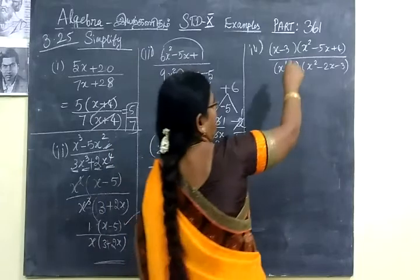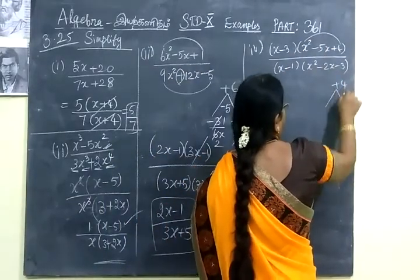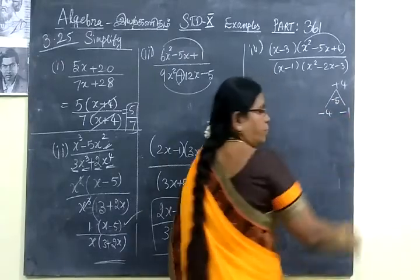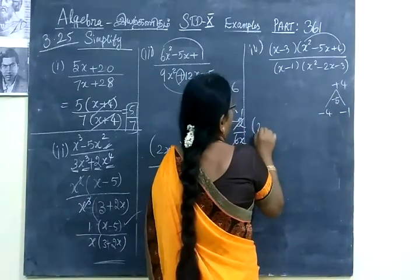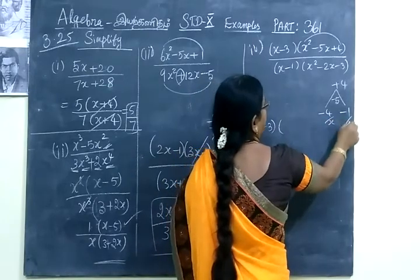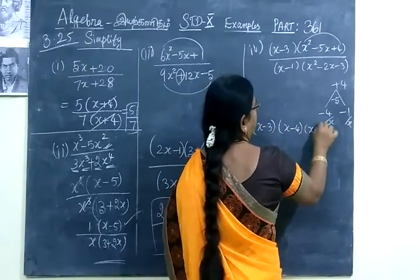Now you split into factors. If you multiply you will get plus 4 and get minus 5. So minus 4 minus 1. So minus into minus plus, then minus. So write it, x minus 3, then x minus 4, x minus 1, by denominator x minus 1.